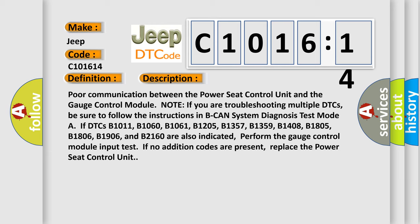Poor communication between the power seat control unit and the gauge control module. Note: if you are troubleshooting multiple DTCs, be sure to follow the instructions in BCAN system diagnosis test mode. If DTCs B1011, B1060, B1061,